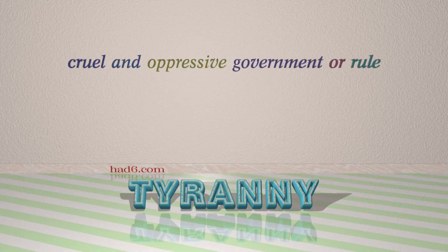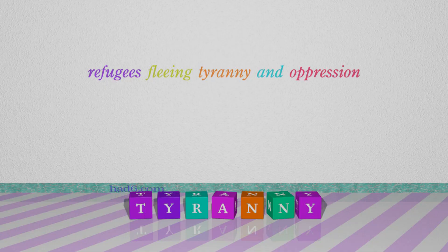Number 5: Tyranny. Which means cruel and oppressive government or rule. For example: Refugees fleeing tyranny and oppression.